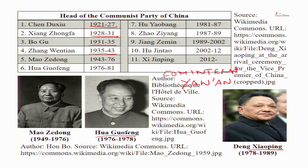Because Hua Guofeng was not very powerful, he was eventually overtaken in influence by Deng Xiaoping. Deng Xiaoping was a party veteran, very influential within the military as well as the party cadre. By 1978, during the third plenum of the 11th party congress, he emerged as the paramount leader. However, he was never head of the Communist Party — he allowed Hua Guofeng to remain chairman. So although he was the paramount leader, he never took the position of chairman of the party.